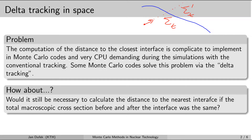What if the total macroscopic cross-section behind the interface was the same as the total macroscopic cross-section in front of the interface? That doesn't necessarily mean that the materials would have to be the same — just the total macroscopic cross-section would be the same. In that case, the distance between collisions would be the same before and after the interface, and we wouldn't really need to calculate the distance to the nearest interface at all.